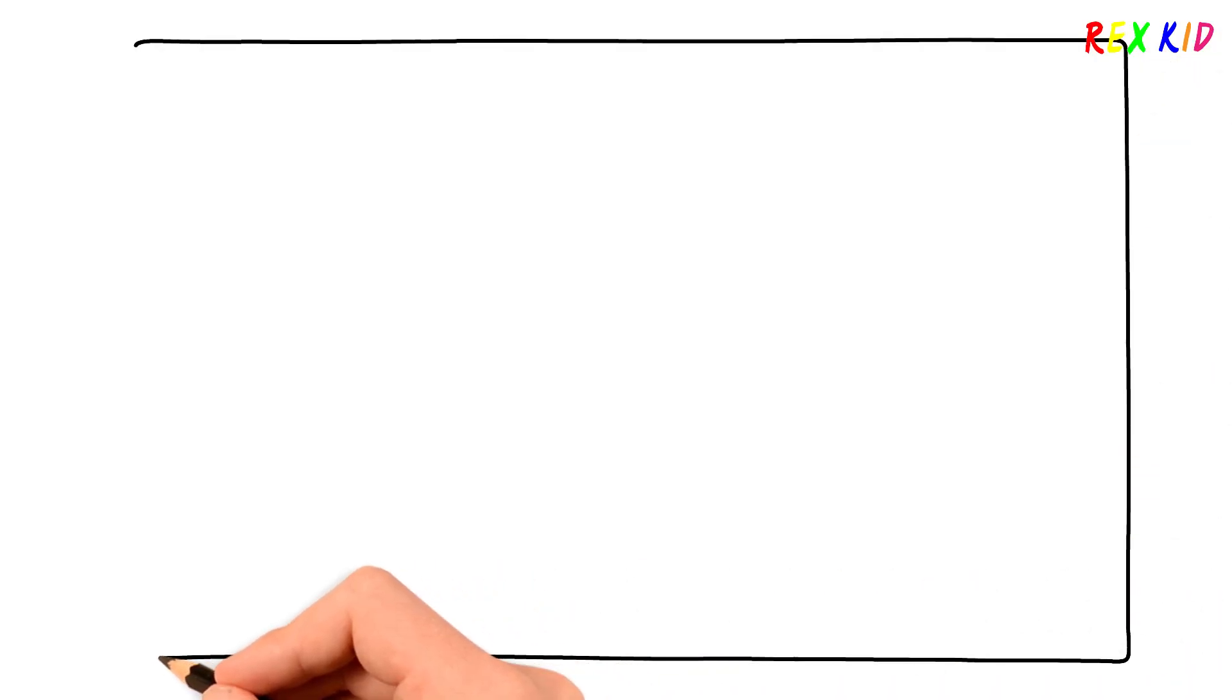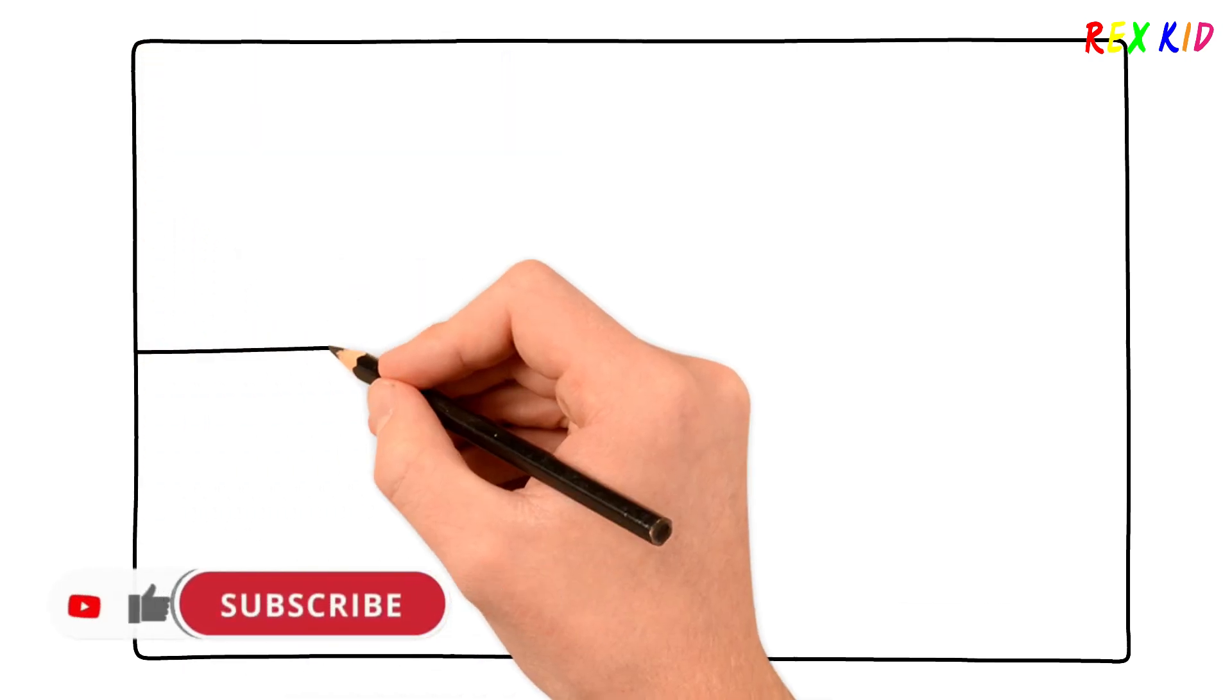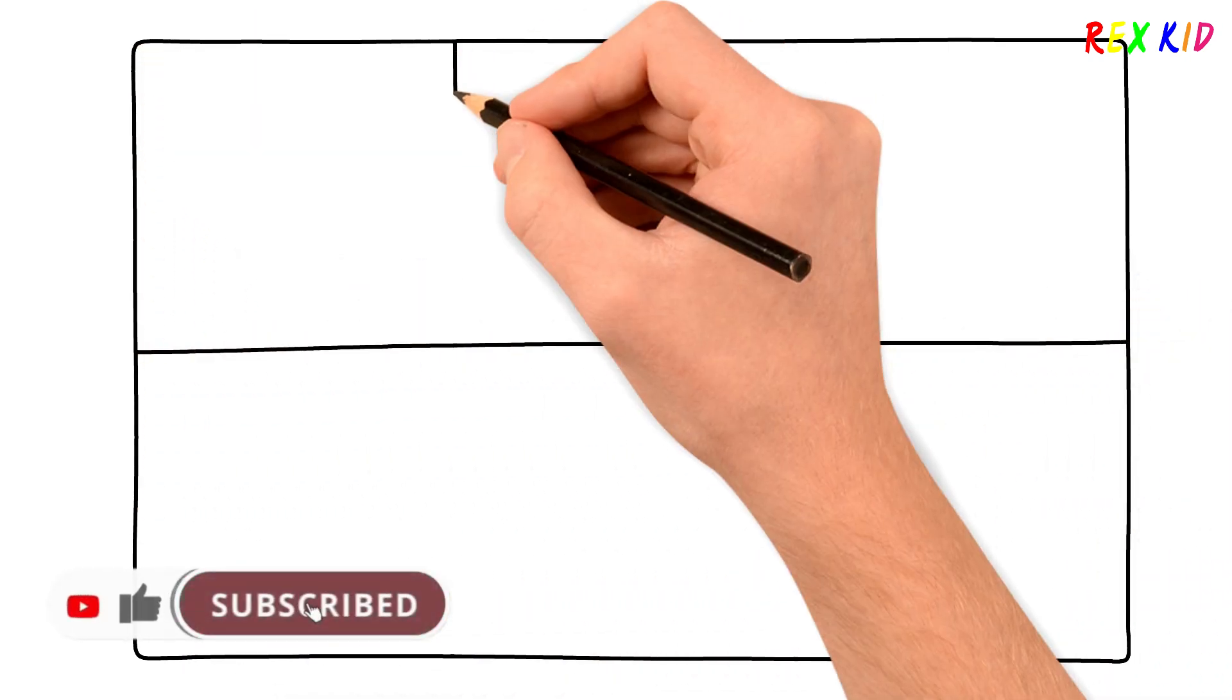First, I'm going to draw a big rectangle. Then, I divide into 6 small squares.